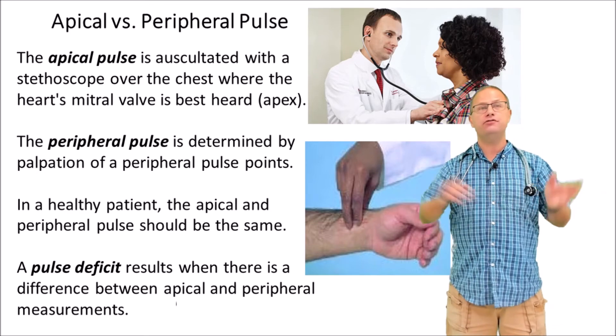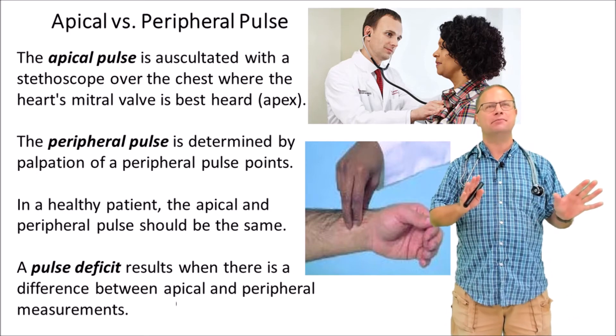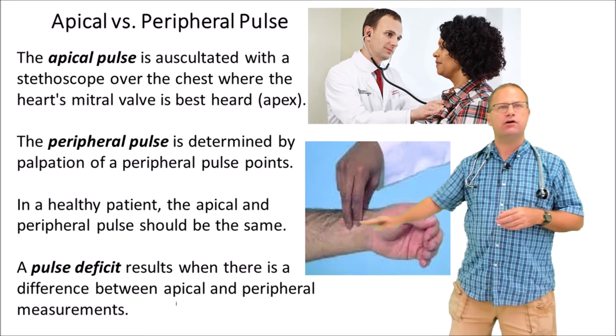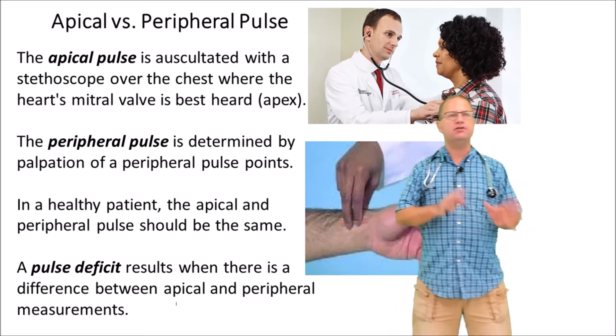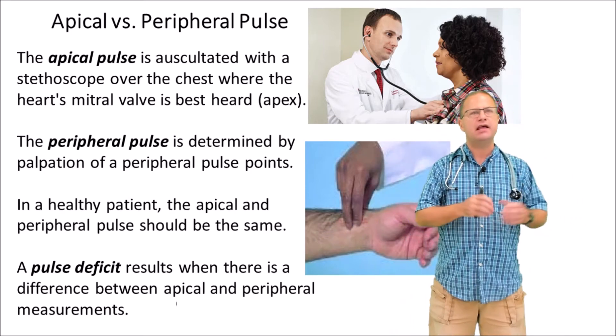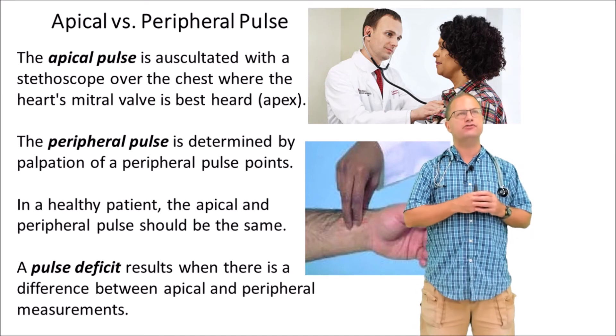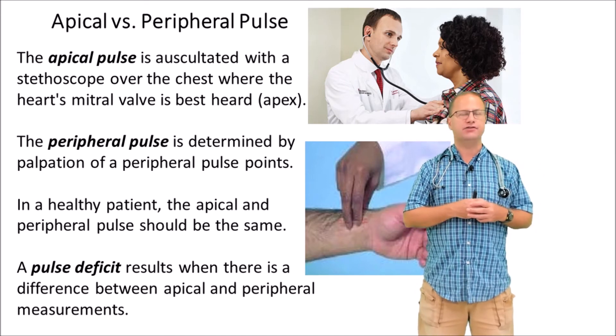Ideally these two numbers should be exactly the same. If they're not, we could have something called a pulse deficit. A pulse deficit happens when there's a difference in the apical and peripheral measurements, and this could indicate some cardiovascular pathology.